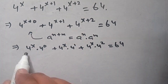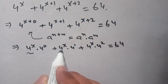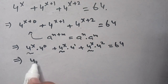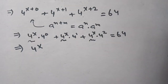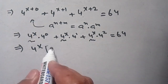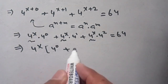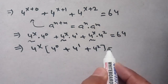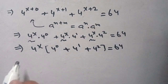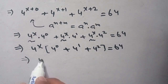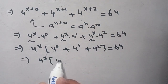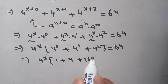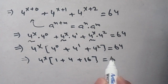Now we can take out 4^x as a common factor from each term. We get 4^x times (4^0 plus 4^1 plus 4^2) equals 64, which implies 4^x times (1 plus 4 plus 16) equals 64.